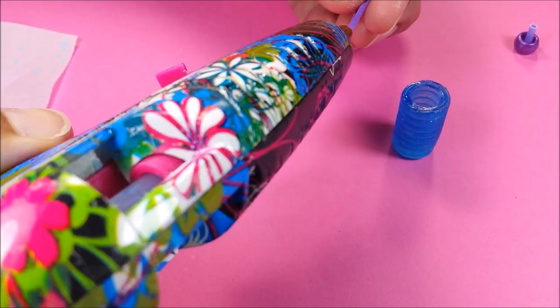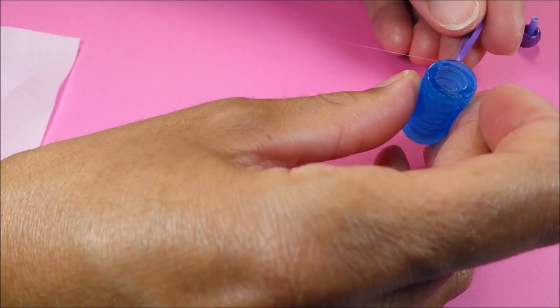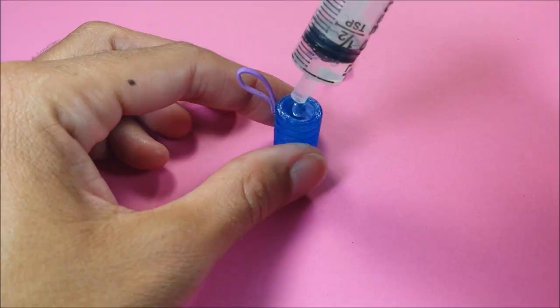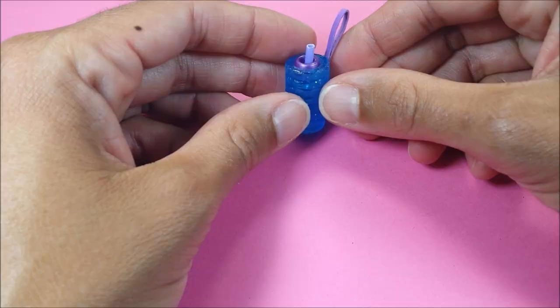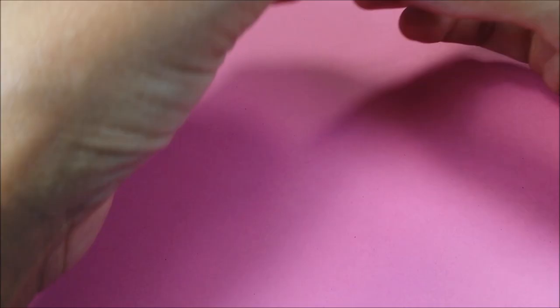I insert the top, which fits nice and snug, and I can squirt out water. Because these pencil grips are squishy, it doesn't displace the glue along the bottom.